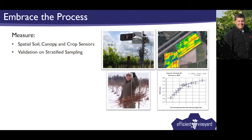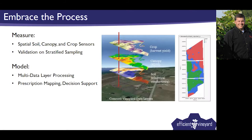What we're trying to do is measure soil, canopy, and crop characteristics using off-the-shelf sensors or new sensors we develop, giving us spatial measurements of those characteristics. Today it's all about yield monitoring. We then take that data — just an electronic signal from a sensor — and validate it into a viticulture measurement that means something from a management standpoint. The measure step is about choosing sensors and stratifying manual samples against them to turn an electronic map into a viticulture map.